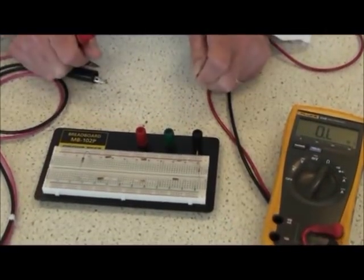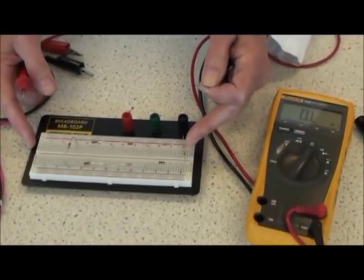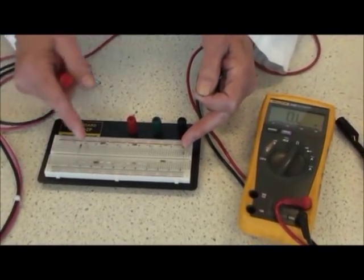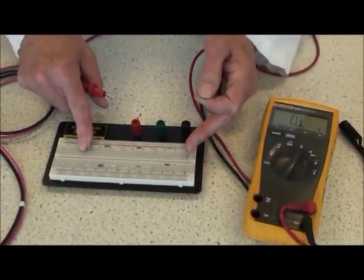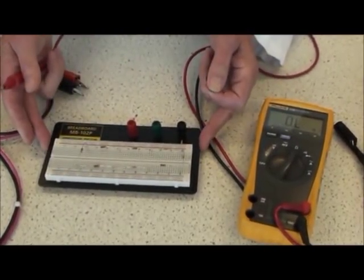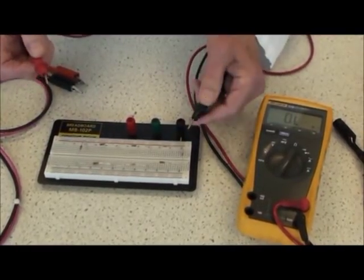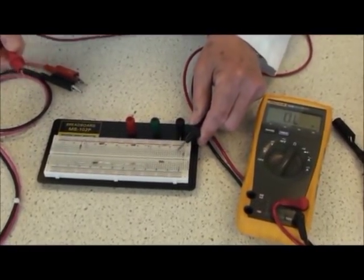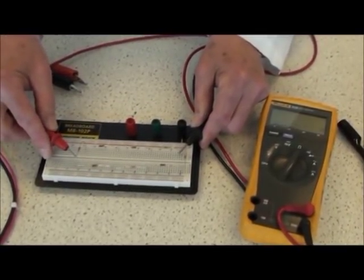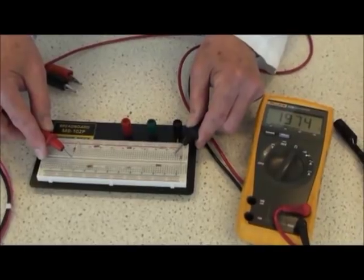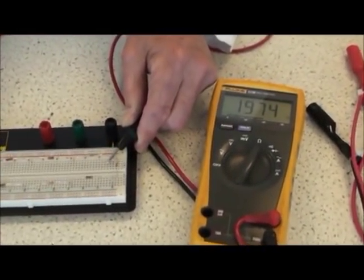To measure a resistance in a circuit, I have diagrammed a simple circuit here, a series parallel circuit of 1,000 ohm resistors in series parallel. It's important, of course, to measure resistance when the circuit is unpowered, not connected to a power supply. So very simply, put the black lead on one side of the circuit and the red lead on the other side of the circuit.